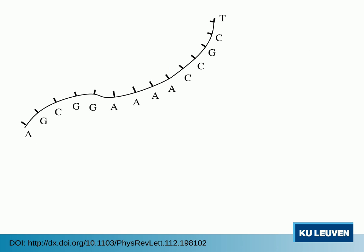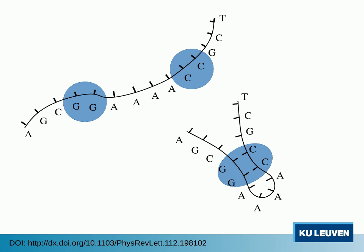This process goes via two steps. First, there is a nucleation, which is the stable binding of a couple of base pairs. This nucleation happens predominantly close to the middle of the sequence.